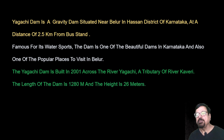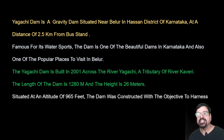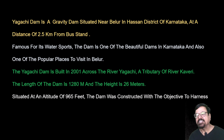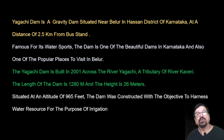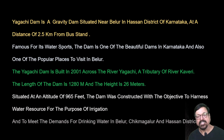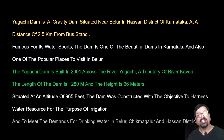Yagachi Dam was built in 2001 across the river Yagachi, a tributary of the river Kaveri. The length of the dam is 1,280 meters and the height is 28 meters, situated at an altitude of 965 feet. The dam was constructed with the objective of water supply for irrigation and drinking water purposes, meeting both requirements — though it does depend on rainfall, and if rainfall is too low it can dry up.